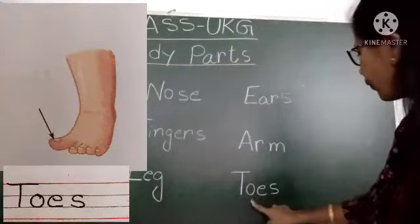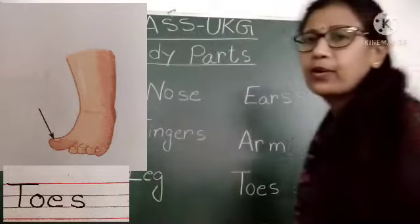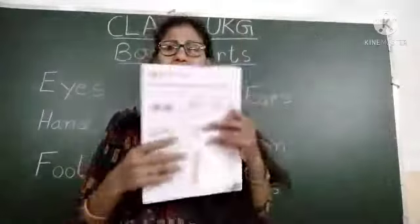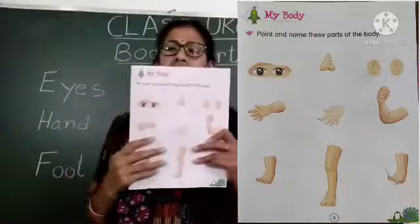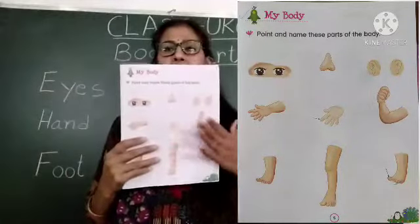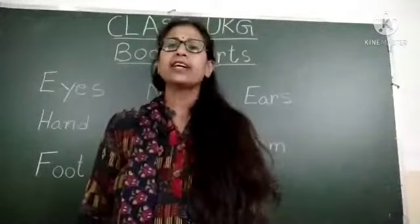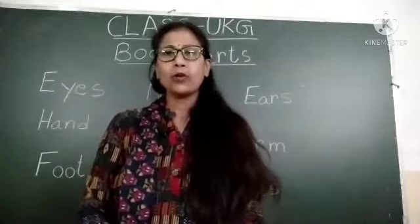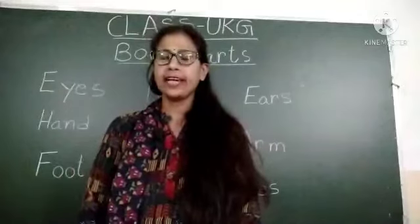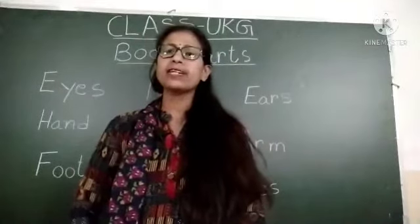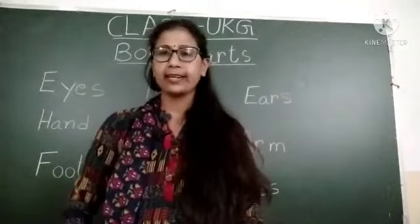Then 'foot' — F double O T. Then 'leg' — L E G. Then 'toes' — T O E S. Write the names below the pictures. Also write five body part names in your General Awareness copy book. Thank you.